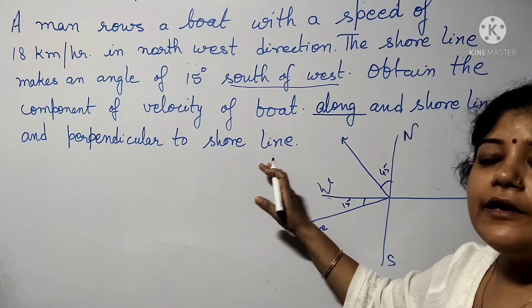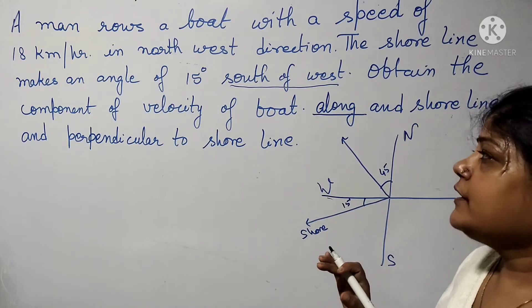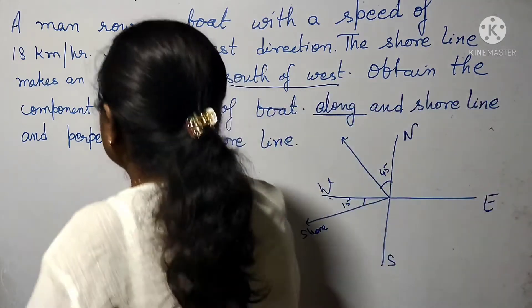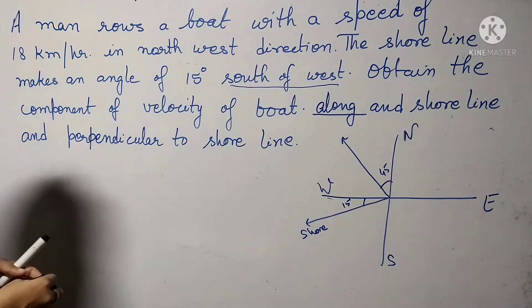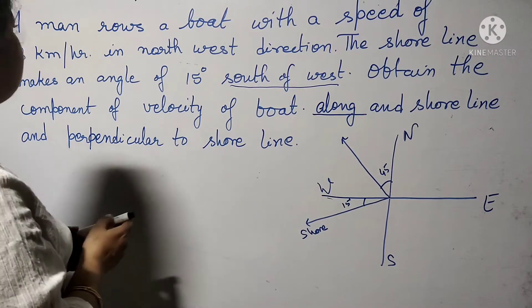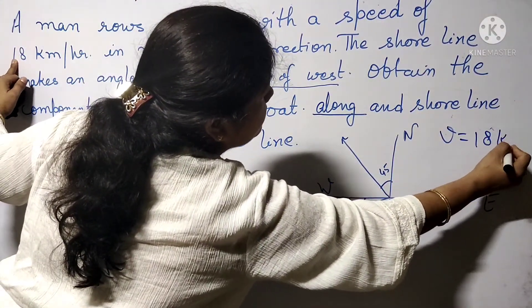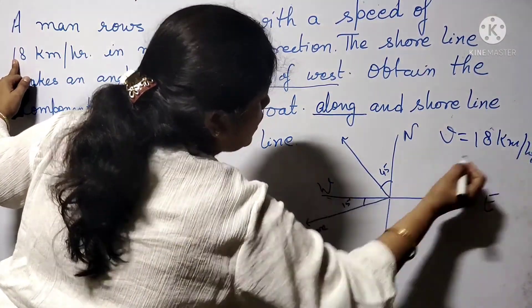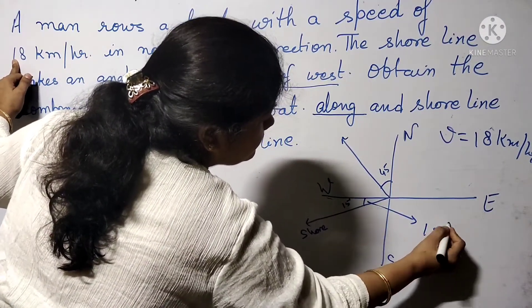If it's perpendicular to shore line, you find the vertical component. For horizontal and vertical components, we use the formula. The velocity is 18 km per hour and the shore line angle is 15 degrees.